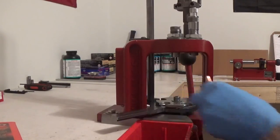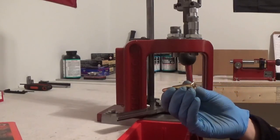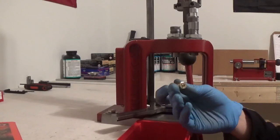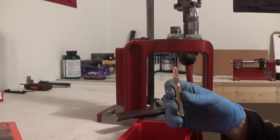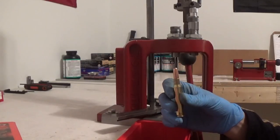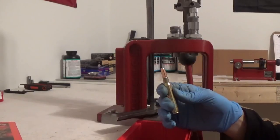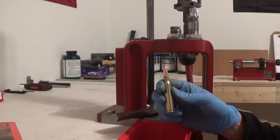But now we got the finished product: 30-06 Springfield with a Winchester primer, large rifle primer, a 180 grain round nose with factory crimp, and we're ready to go to the range. Until next time, guys.